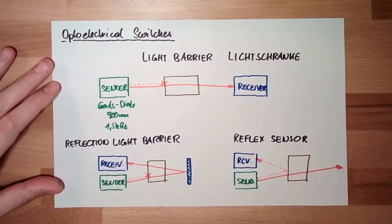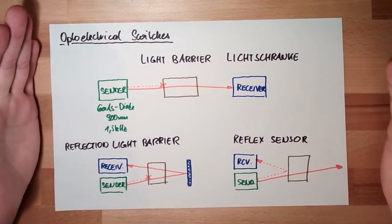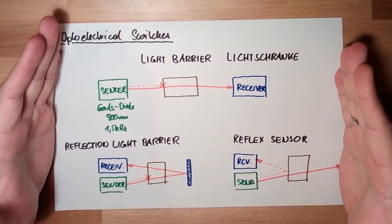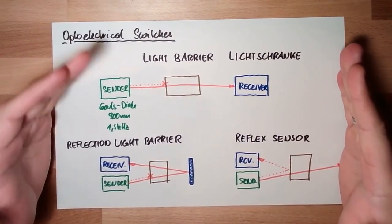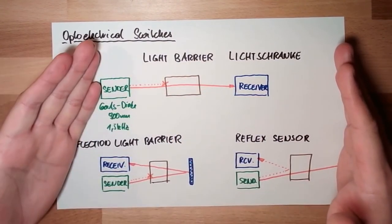So, you see, reflex taster in German. These are the typical things. What might disturb those things? If the receiver is receiving some light, which does not come from the sender.